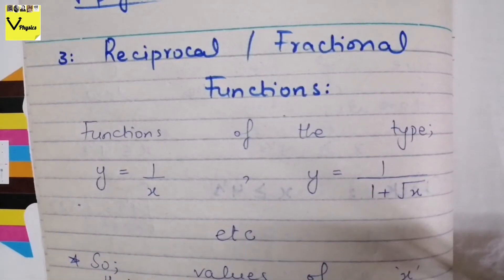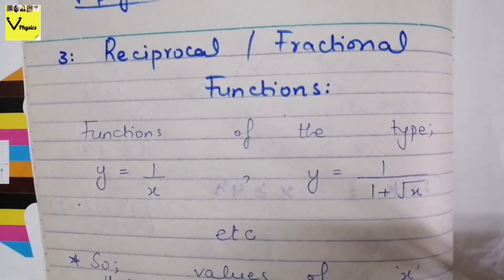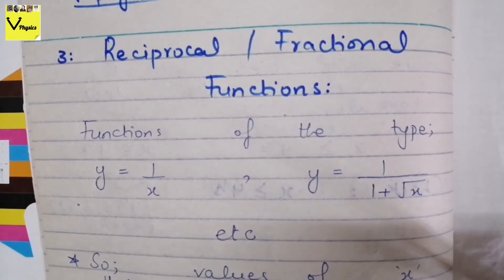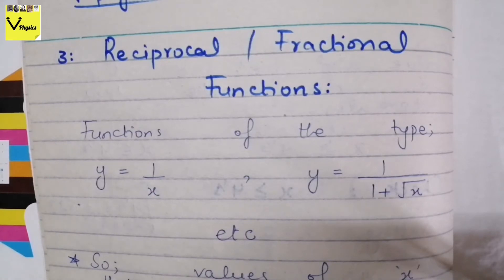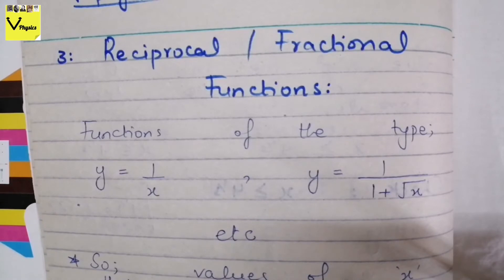Next we look at fractional functions. Fractional functions are those in which a variable lies in the denominator — at least one variable. For example, y = 1/x (x is in the denominator), y = 1/(1 + √x) (x is in the denominator). All functions in which a variable appears in the denominator are called fractional functions.